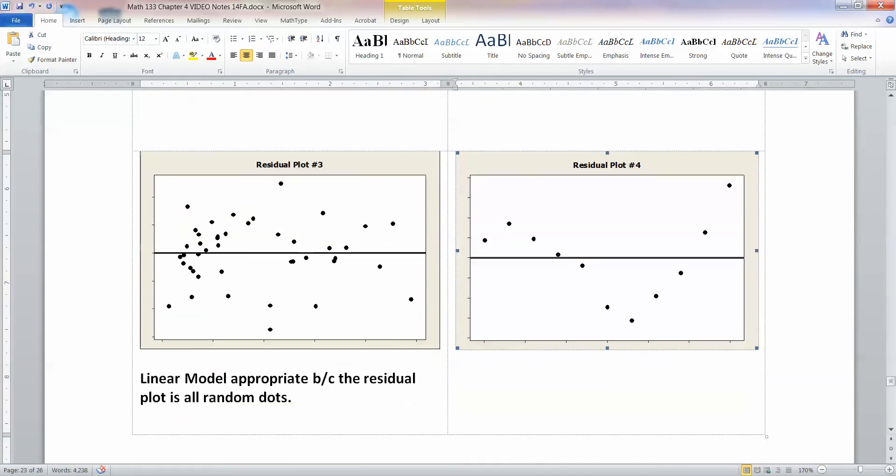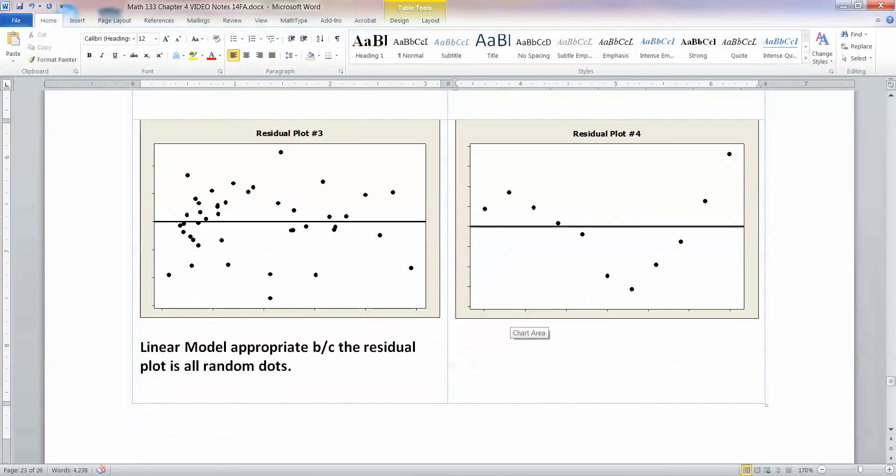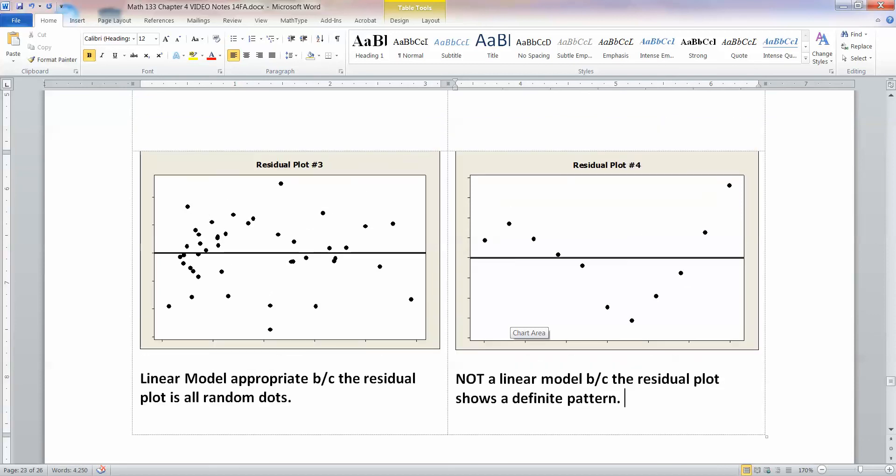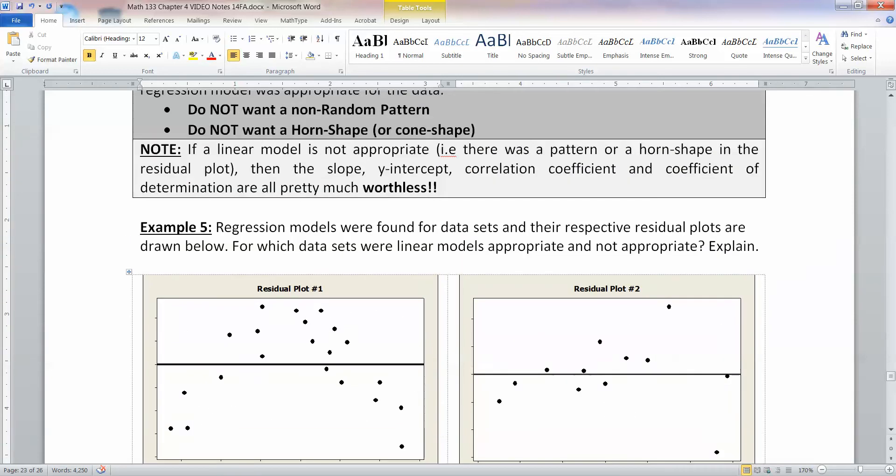Now, what about number four? I know I'm skipping one and two, but I'll come back to them. Now, number four, you can see a very clear pattern to this, a non-random pattern. We do not want that. This is not a linear model. Residual plot shows a definite pattern. It seems kind of counterintuitive, but we want it to look like somebody threw the points up there randomly. We want random dots. That's good. Random dots good, patterns bad.